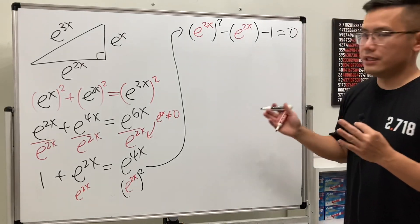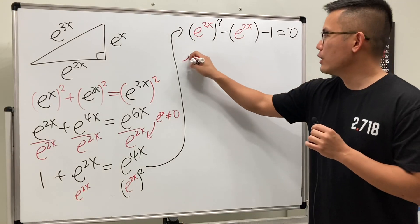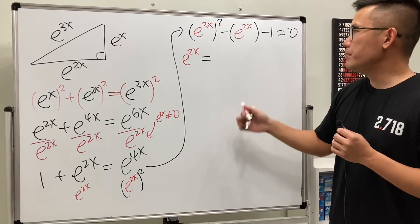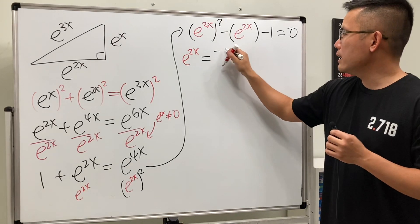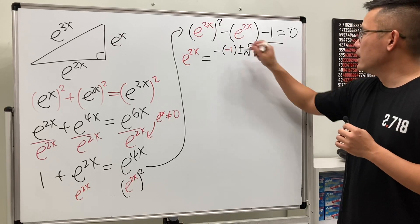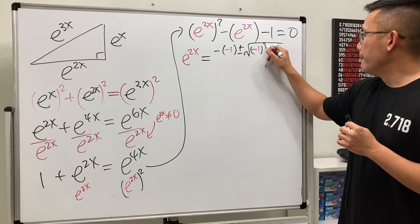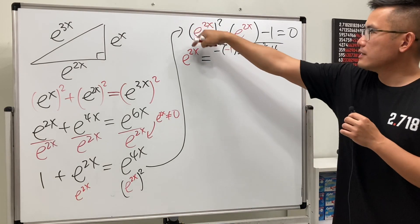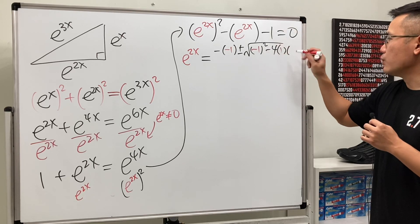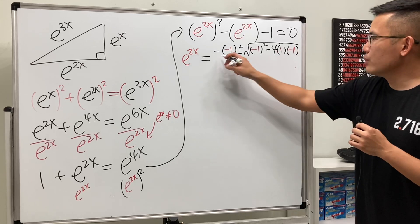So right here let's just go ahead and use the quadratic formula, but we will have to make this input right here e to the 2x, and that's going to be equal to—okay, negative b, so we have negative negative one like so, and then plus or minus square root of negative b, so it's negative one and then square, minus four times a is one and then c is negative one, like this, and then all divided by two times one, two times a. Yeah, cool.